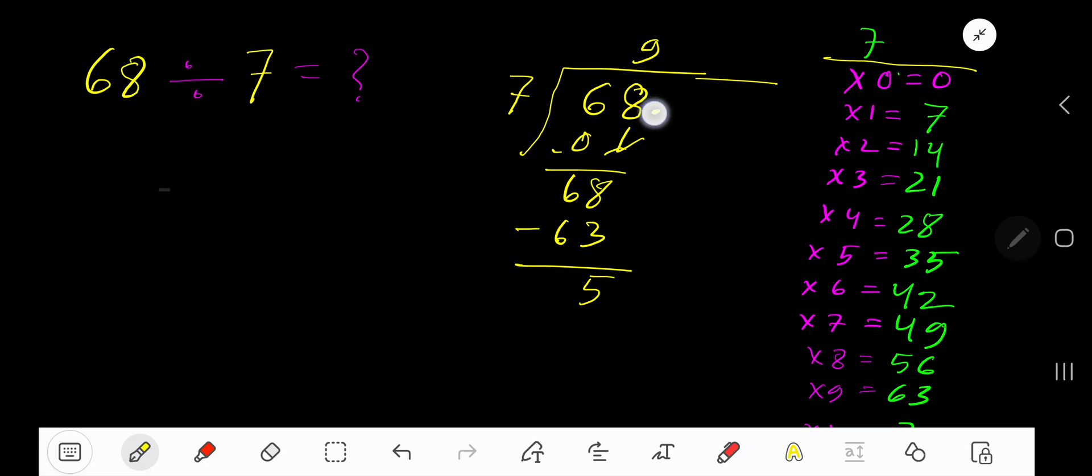Bring down the first zero. Before the zero there's a decimal. Decimal must come to the quotient directly. 7 goes into 50 how many times? 8 times is 56, which is greater, so 7 times. 7 times 7 is 49.